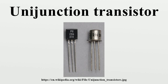The programmable unijunction transistor, or PUT, is a multijunction device that, with two external resistors, displays similar characteristics to the UJT. It is a close cousin to the thyristor and, like the thyristor, consists of four PN layers. It has an anode and a cathode connected to the first and last layer, and a gate connected to one of the inner layers.